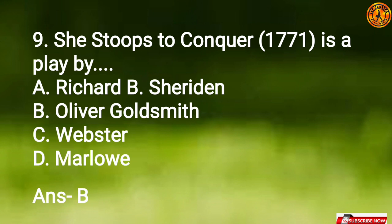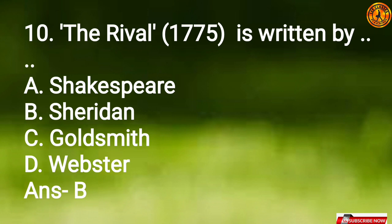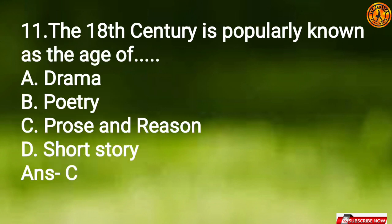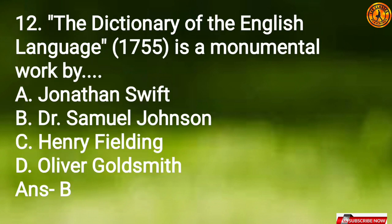Question 9: 'She Stoops to Conquer' is a play by Option B, Oliver Goldsmith. Question 10: 'The Rivals' is written by Option B, Sheridan. Question 11: The 18th century is popularly known as the Age of Option C, Prose and Reason. Question 12: 'The Dictionary of the English Language' is a monumental work by Option B, Dr. Samuel Johnson.